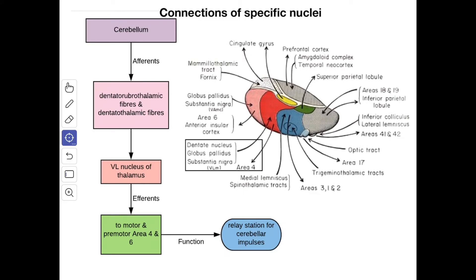Next we'll see the connections of the ventral lateral or the ventral intermediate nucleus of the thalamus. From the cerebellum you get the dentatorubrothalamic fibers and dentatothalamic fibers. These form the afferent and they terminate in the ventral lateral or intermediate nucleus of the thalamus. From here the efferent goes to the motor and premotor area, area number 4 and 6. The function is it acts as a relay station for the cerebellar impulses.